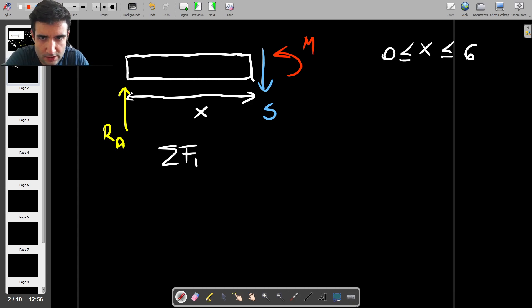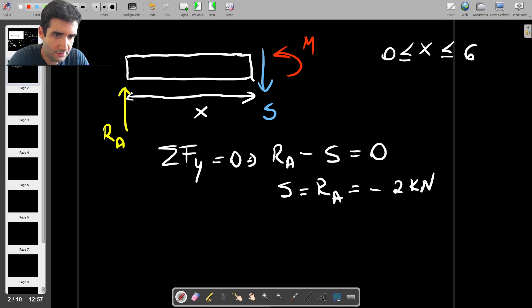We have sum of force in the y direction is equal to 0, which means that RA, which is acting up, and minus S, which is acting down, is equal to 0. So the shear force is equal to RA, so the shear force is minus 2 kN.